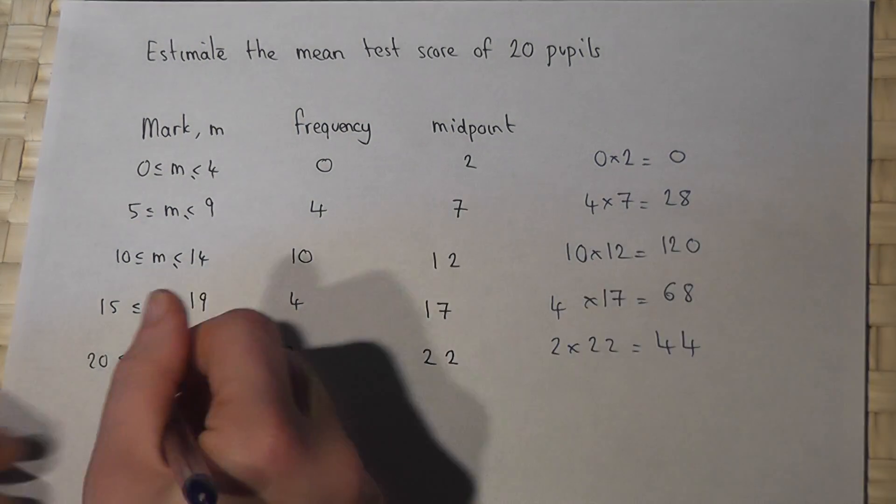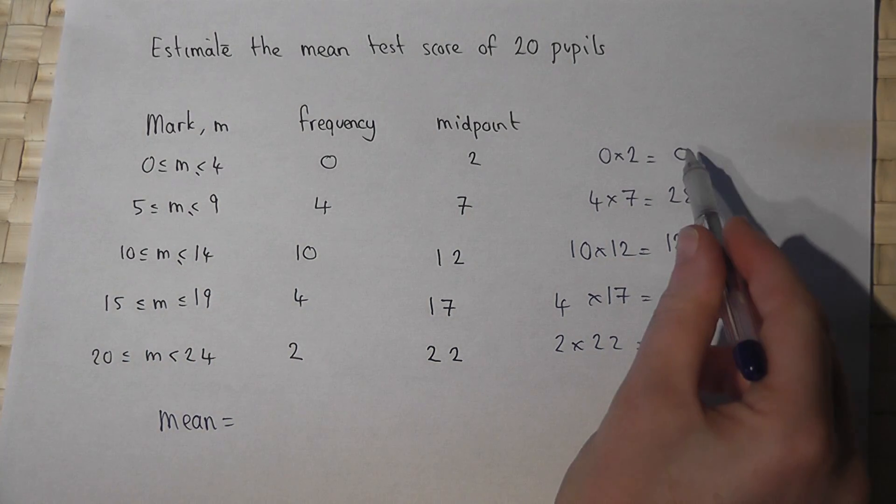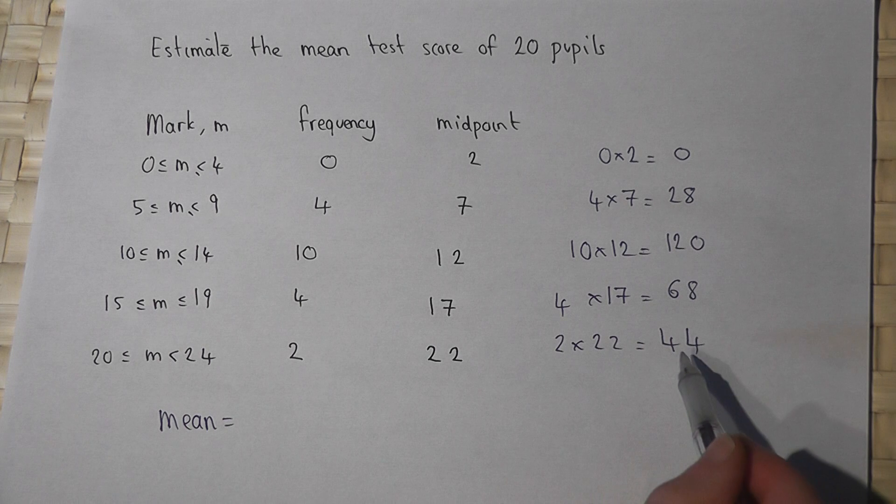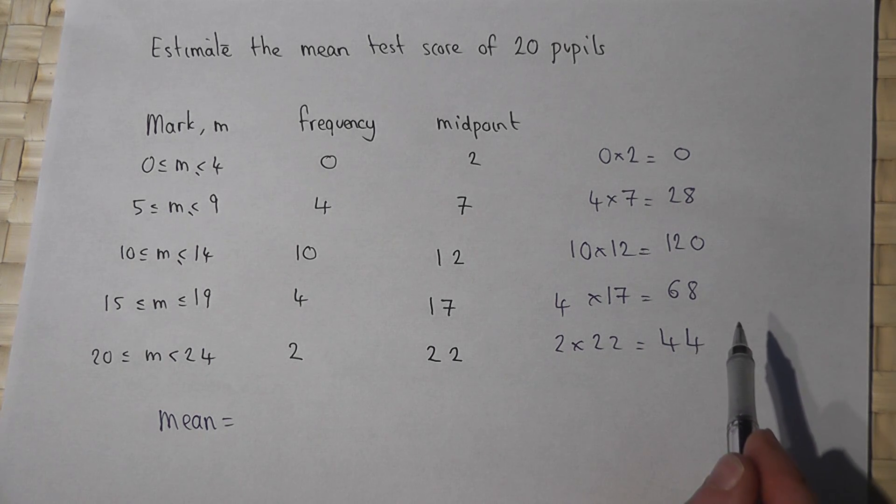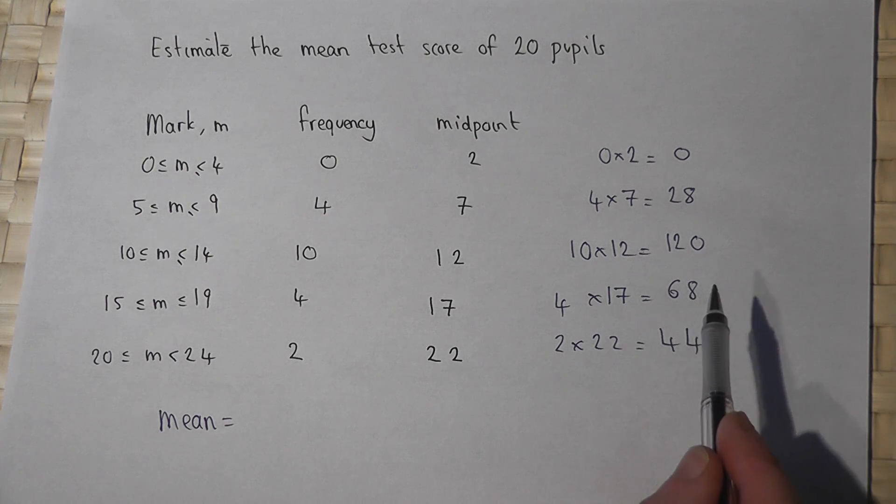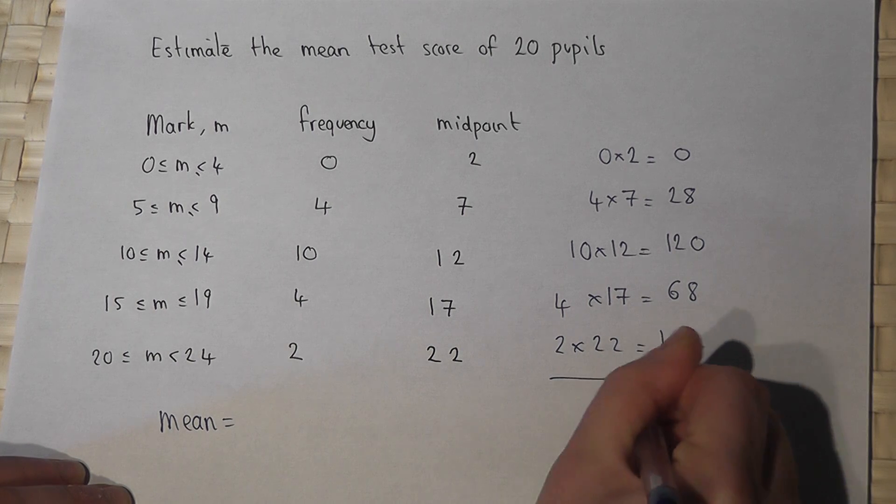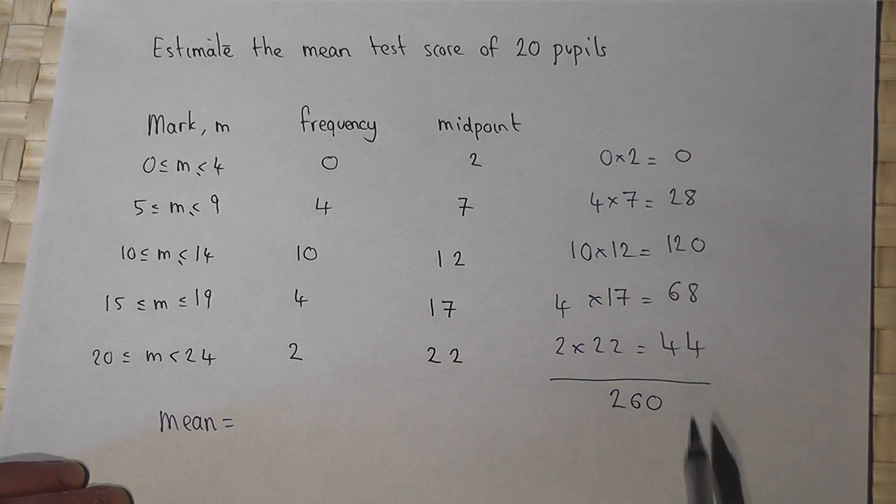So to work out the mean, I must work out the total of all of the scores. The total of all of the scores was two hundred and sixty. I need to put all these calculations here.